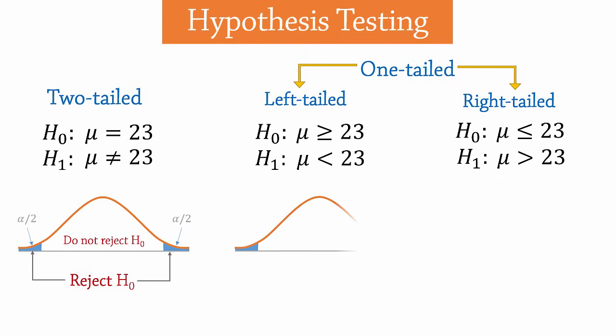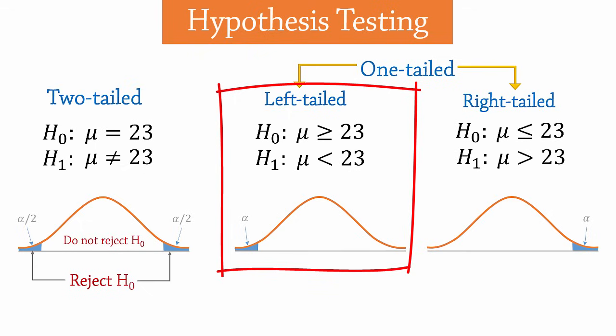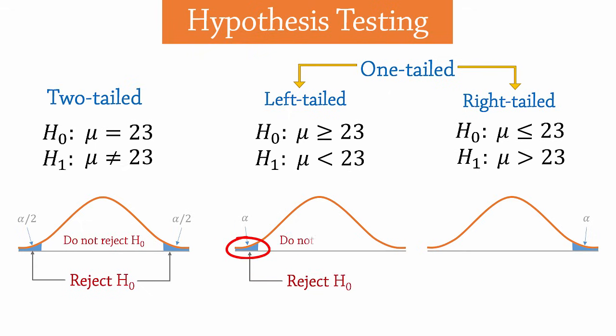For one-tailed test, alpha is not divided. So for the left-tailed test, the rejection region is in the left tail. And it's in the right tail for the right-tailed test. Once the rejection region is set, we then calculate the test statistic.